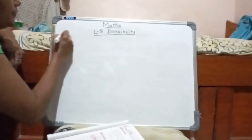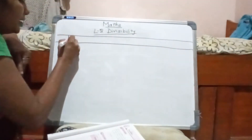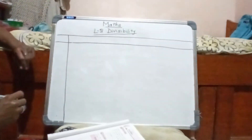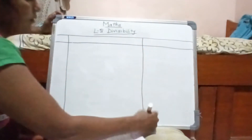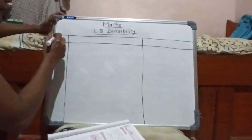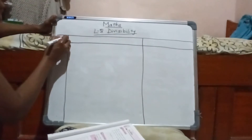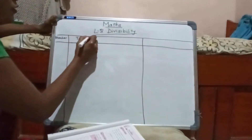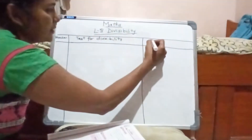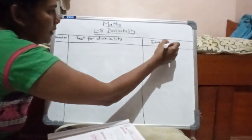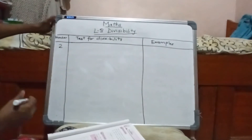First we will recall what we have done in the lower class. We will make a table — we'll write the number for which we will be writing the divisibility test, and here we will write the concept of the divisibility test, and examples to understand them.